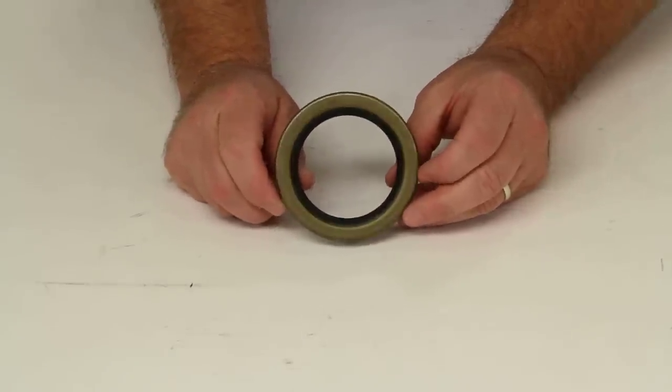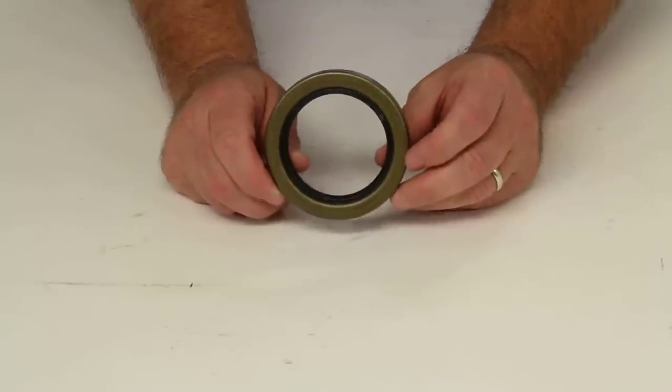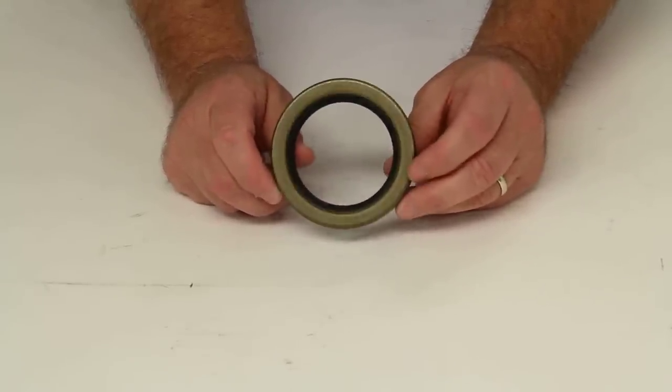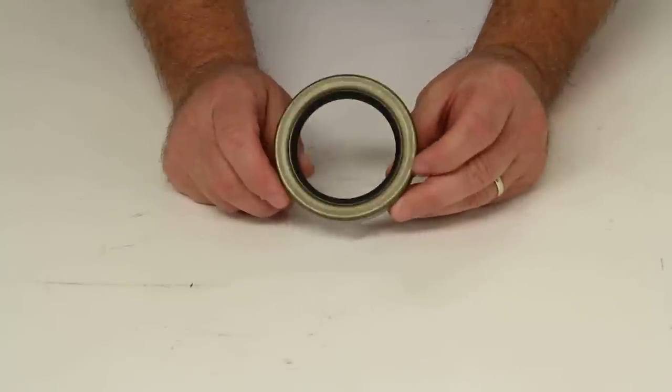Now that wear sleeve is no longer available, so if you happen to have the wear sleeve on your spindle and you want to replace the oil seal, you can use this one.